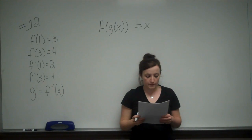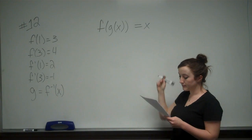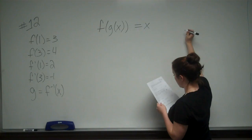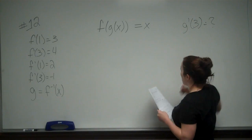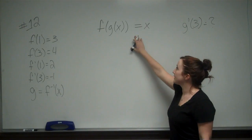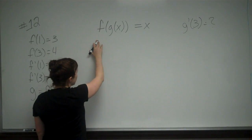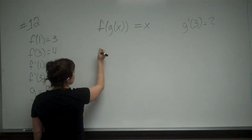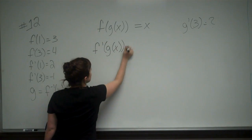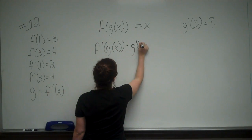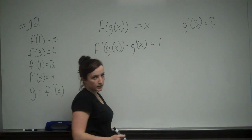It says use the fact that f of g of x equals x, and we want to differentiate implicitly because we are looking to find g prime of 3. So it tells us that we're going to need to differentiate this implicitly. So we do that by working with each side. This gives me f prime of g of x times g prime of x is equal to the derivative of x is 1.